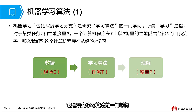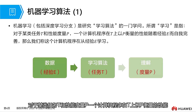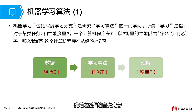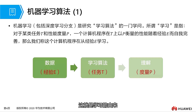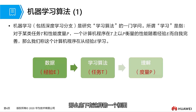About learning, there is an official definition: for a certain type of task T and performance measure P, a computer program's performance on T, as measured by P, improves with experience. We call this process of the computer program learning from experience E. This involves going from data to learning algorithms, to understanding corresponding to experience, task, and measurement respectively.